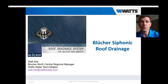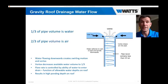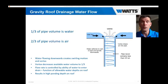To understand siphonic roof drainage, we have to understand the principles of standard gravity flow and gravity roof drainage. With a gravity drain, water flowing downward through the slope on the roof goes to the drain, and as it goes down the vertical pipe, it creates a swirling or vortex motion. The water adheres to the sidewalls of the pipe and clings to the walls on the vertical. So you're only having a third of the pipe volume that's full of water, where two-thirds of the volume is full of air — a pretty inefficient flow option.